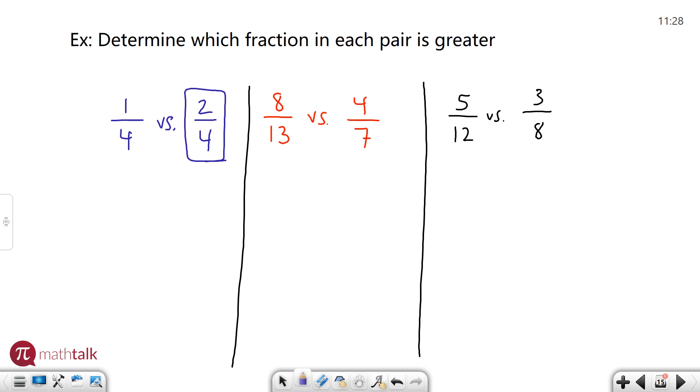If you cross multiply these values and go up diagonally and find the product, seven times eight is 56, thirteen times four is 52. All you have to do is compare the values of those two numbers to see which one is bigger. Obviously 56 is bigger than 52 which means eight over thirteen is the greater fraction between those two. Eight over thirteen is bigger than four over seven.